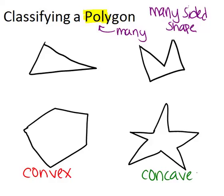If you look closely, you'll notice the two polygons on the right are sort of caved in at certain points. On the upper picture, at this point, it's like the two sides have caved in to the middle. In the polygon that looks like a star, that's happened at multiple points. If a polygon looks like this, where some of the sides look to have caved in, it's called concave.